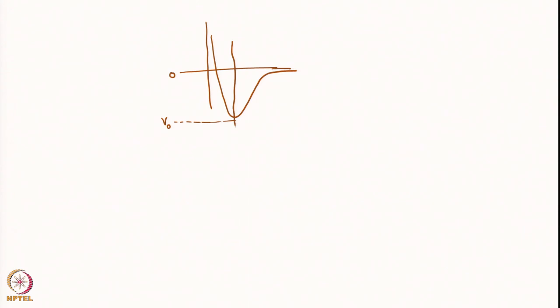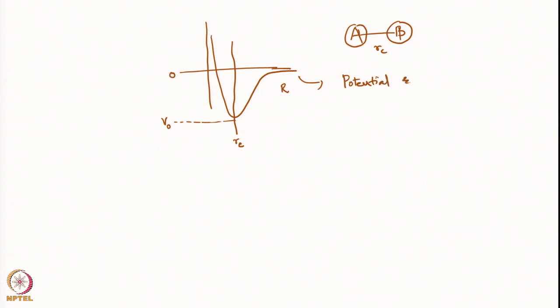If you have a diatomic AB molecule, it has a potential with some shape. We call the minimum value V0, and there is an equilibrium distance RE for the bond AB. The equilibrium distance is RE, and this is the potential energy function as a function of R — the potential energy. At the bottom of this well, one can write the potential as a Taylor series expansion.